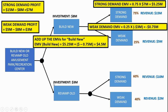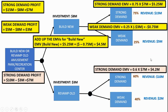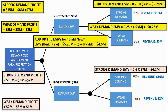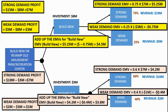Let's find the EMV for the revamp option. The profit, if there's a strong demand, is going to be 10 minus 3, then multiply that by 0.6, and we come out with $4.2 million. For weak demand, that's $2 million minus $3 million, which gives minus $1 million, then multiply minus $1 million by 40%, giving minus $0.4 million. Adding those together, you end up getting $3.8 million.